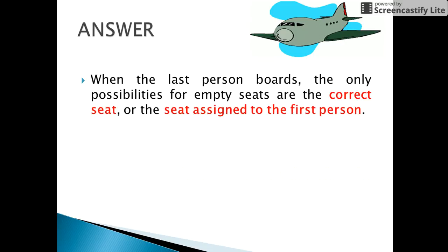So when the last person boards, the only possibilities for the empty seats are the correct seat, that is the seat assigned to him, or the seat that was assigned to the 1st person.